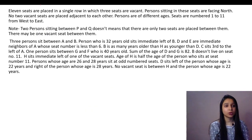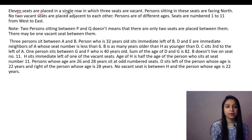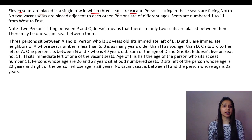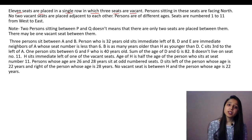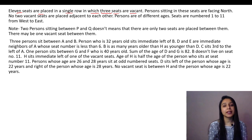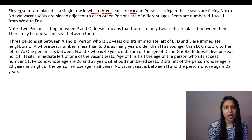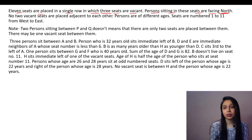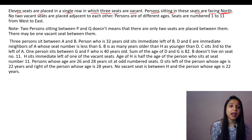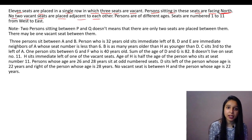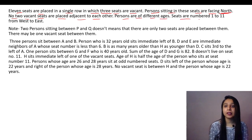Let's start. This is the first question. 11 seats are placed in a single row, in which 3 seats are vacant — so 8 seats are occupied. The persons sitting in these seats are facing north, numbered 1 to 11 from west to east.